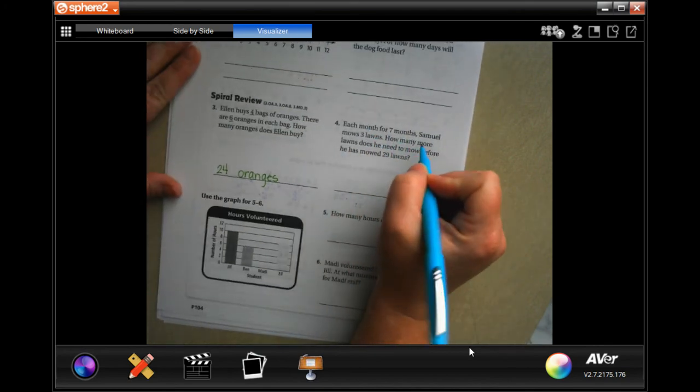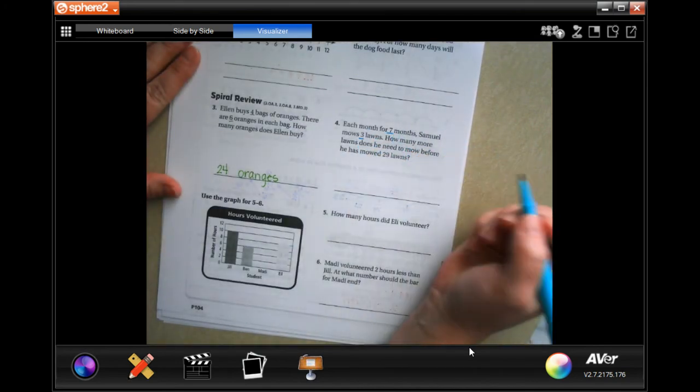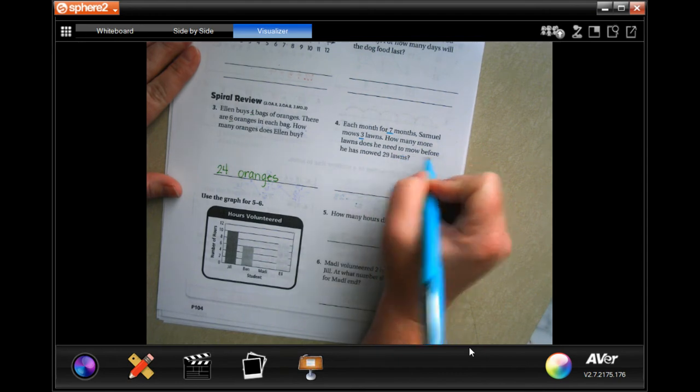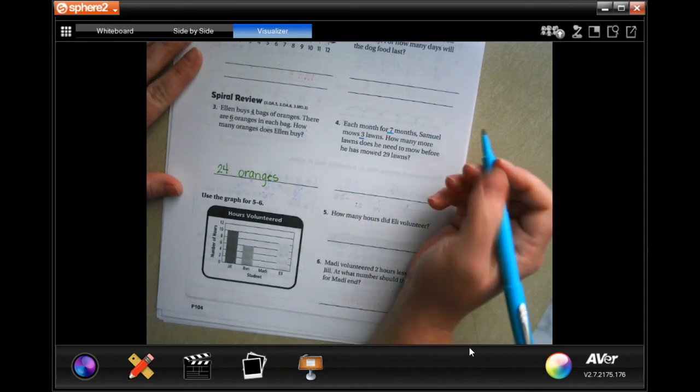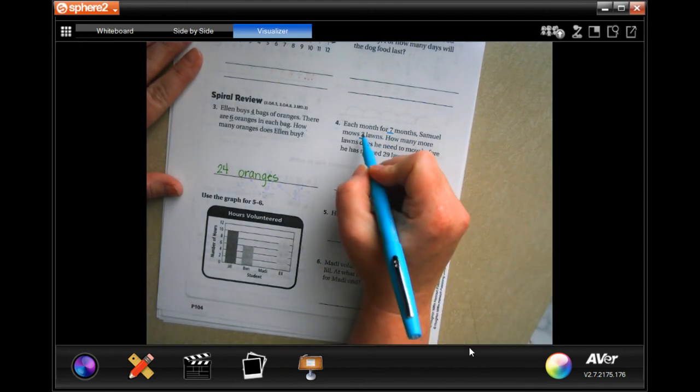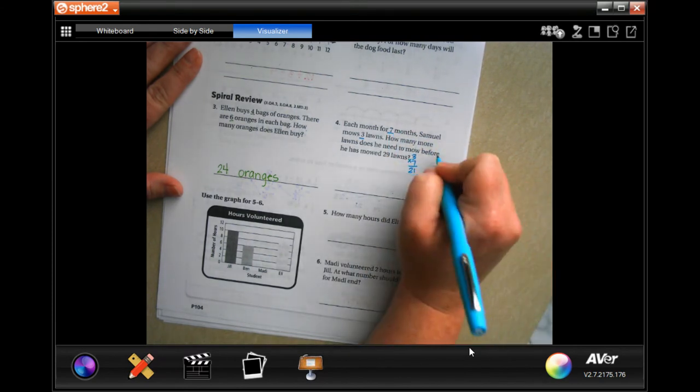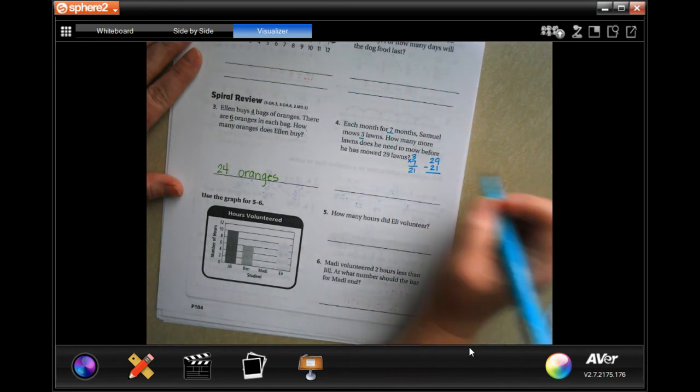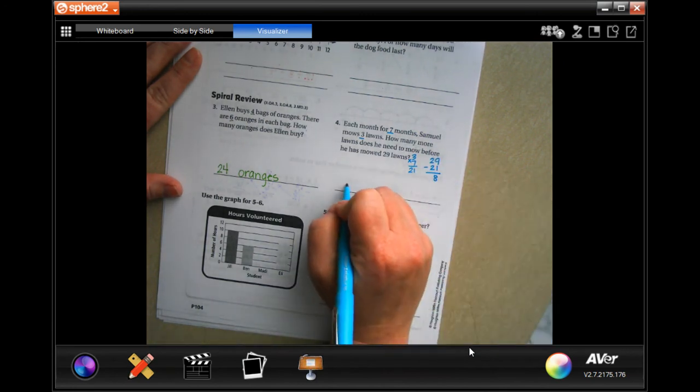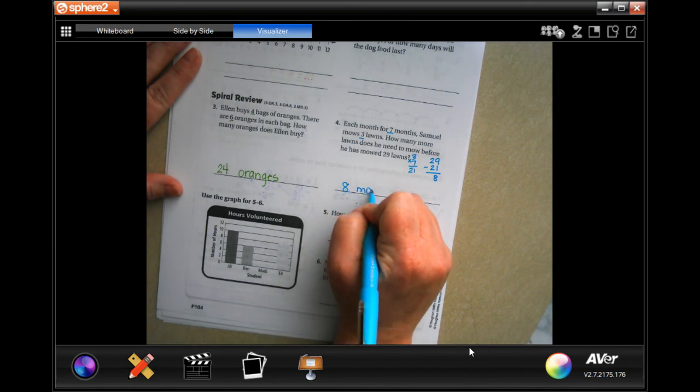Each month for seven months, Samuel mows three lawns. How many more lawns does he need to mow before he could mow 29 lawns? It's a two-stepper. Three times seven is 21, then I need to find the difference between 29 and 21 to subtract and get eight. Eight more lawns.